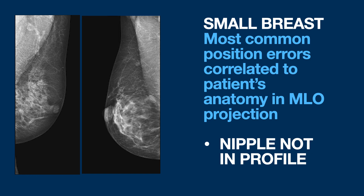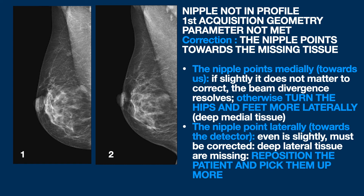The last positioning error that often presents itself in a small breast is the nipple not in profile. It means that the first acquisition geometry parameter has not been met. Remember this dogma: the nipple points towards the missing tissue. If it points medially — towards us — and the rotation is only a few degrees, do not correct; the beam is divergent and corrects it for us. If the rotation is more significant, ask the patient to turn hips and feet even more laterally to reach and document the deep medial tissues. If the nipple points laterally towards the detector, deep lateral tissue is missing, and you must reposition the patient to recover that tissue.